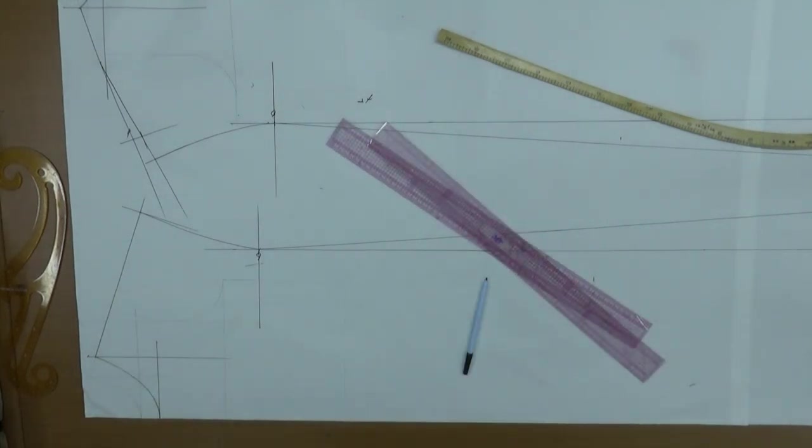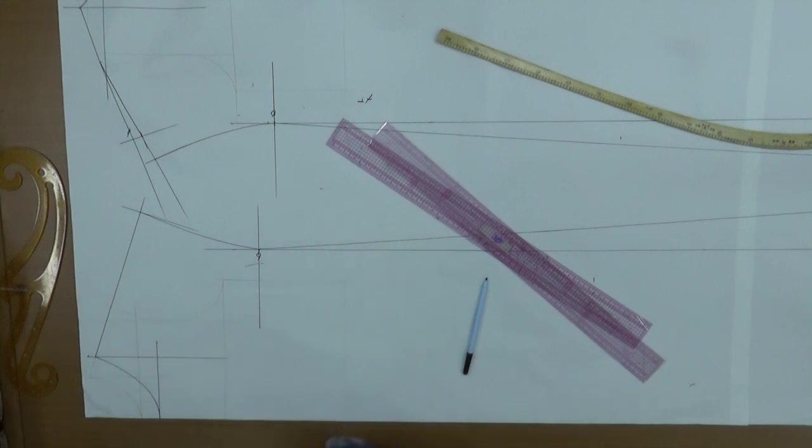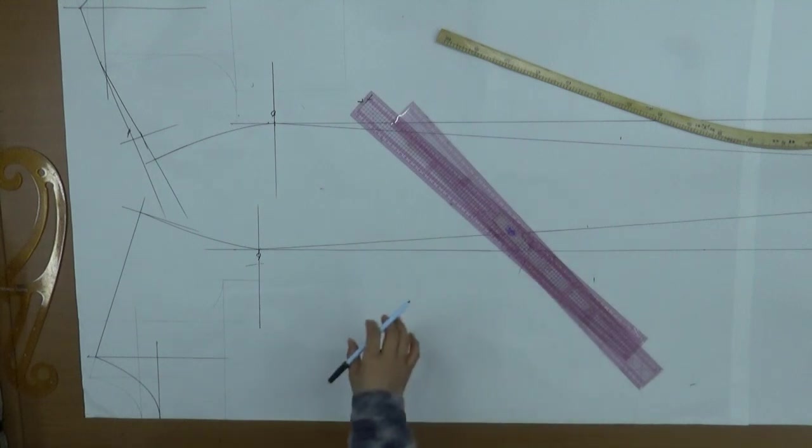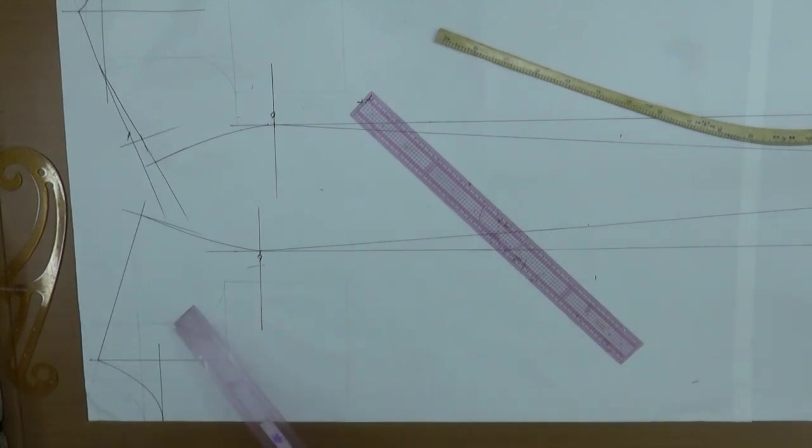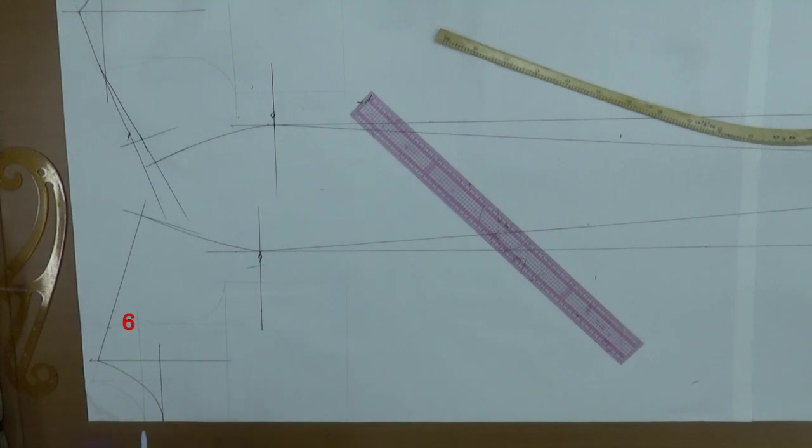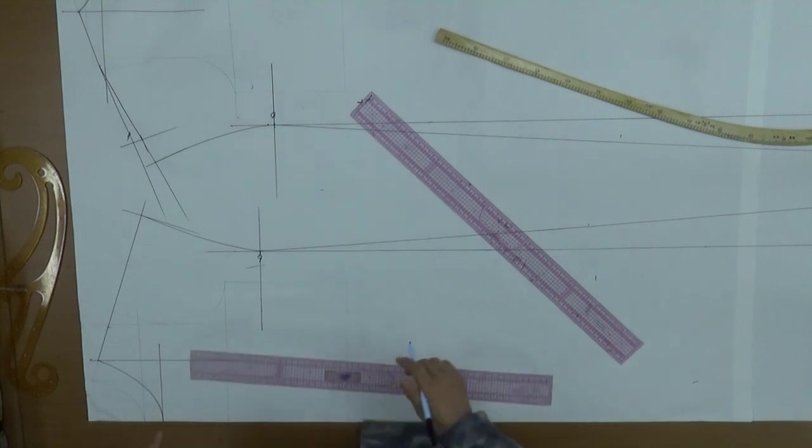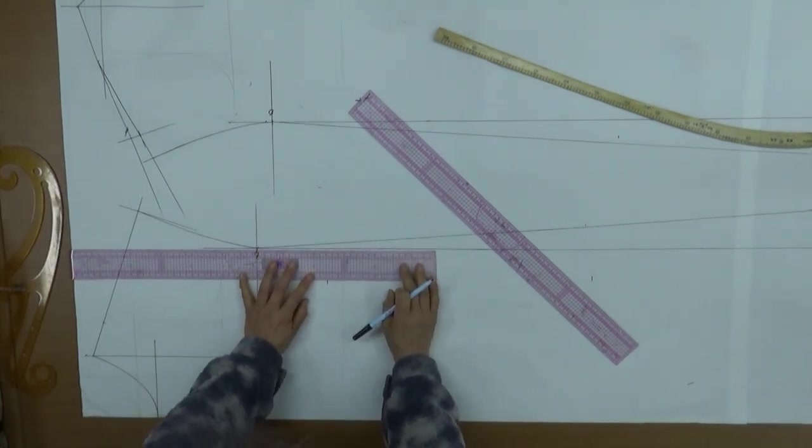Now I'll do the front panel. Measure the length of the side seam. Can you see here? Measure the side seam length: 96.8cm. I'll mark the length from here first. 36.8cm is here. 11.7cm. Mark the front panel length first like this.